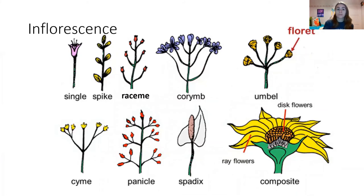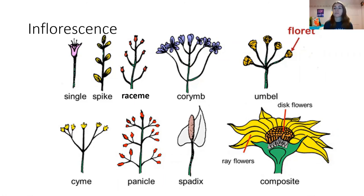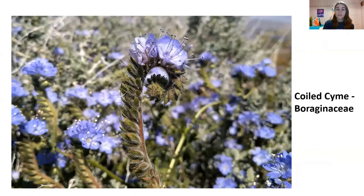Then zoom out a little bit and see how those flowers are arranged on the plant. You can see anywhere from the single flower we talked about earlier to composite inflorescences — how sunflowers or sunflower relatives are arranged with a lot of tiny flowers in what looks like a much bigger flower. This coiled cyme is an inflorescence known for being in Boraginaceae, the borage family.